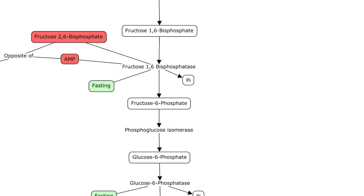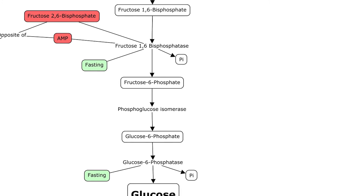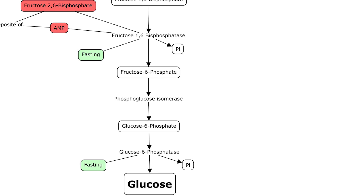That's going to give us fructose 6-phosphate. The enzyme is also stimulated by fasting — makes sense, right? So our fructose 6-phosphate: we've got phosphoglucoisomerase, which is going to rearrange our fructose 6-phosphate to glucose 6-phosphate. Then we've got another enzyme that wasn't present in glycolysis — glucose 6-phosphatase — and that's going to remove the phosphate group from our glucose, going off as inorganic phosphate. That is stimulated by fasting, and that leaves us with what we've been trying to get to: glucose. And that in a nutshell is gluconeogenesis.